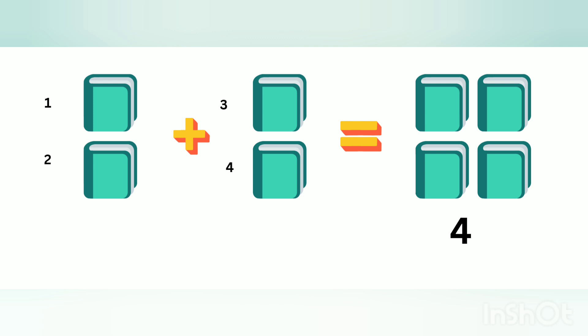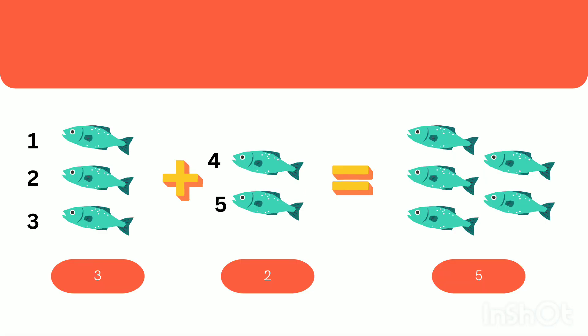four. Finally we have four blocks. Two plus two gives four. Next, three plus two gives five. We have three fish plus two fish. Let's count again: one, two, three, four, five. Finally we have